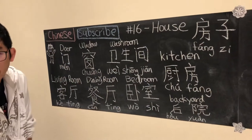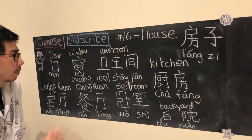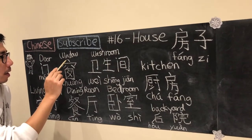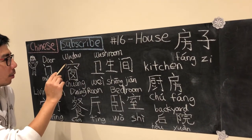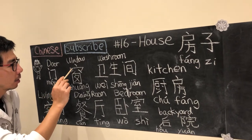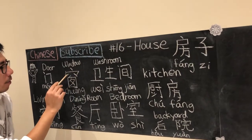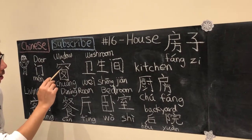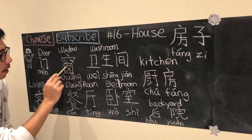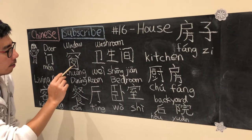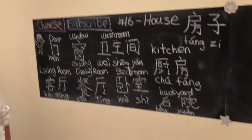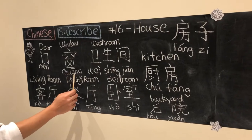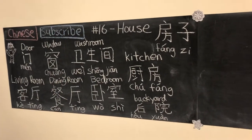Second, beside the door, we have the window. The window is 床. This is how you write 床 — it has twelve strokes.